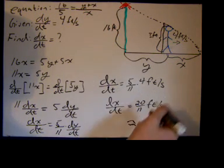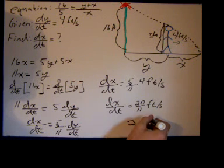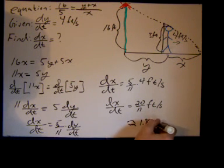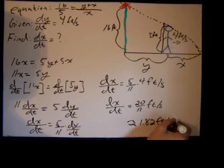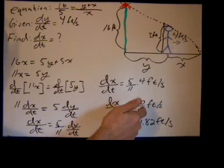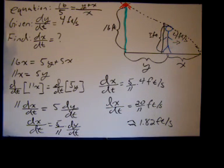So we could say that the rate at which the length of her shadow is changing as she walks away from the light is approximately 1.82 feet per second. Depending on your professor, a lot of times when we do related rates we go ahead and get an approximation because it's physics related and science people like decimals.